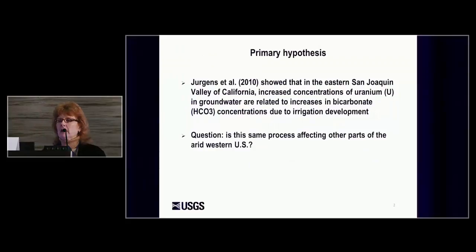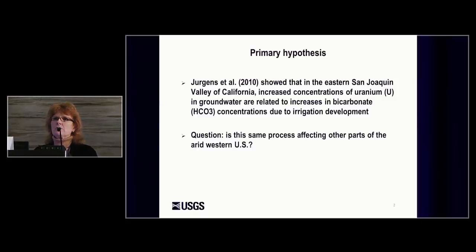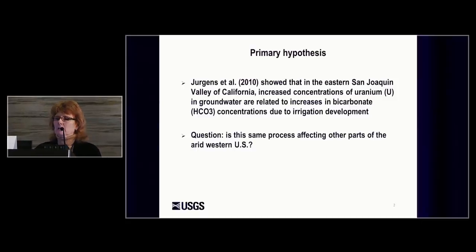The primary hypothesis we're working from was developed by Bryant Juergens. He showed that in the eastern San Joaquin Valley of California, increased concentrations of uranium in groundwater are related to increases in bicarbonate concentrations due to irrigation development. So we asked ourselves: is the same process affecting other parts of the arid western U.S.?